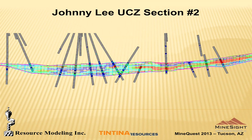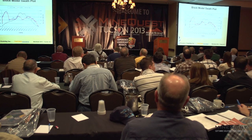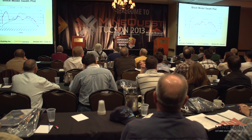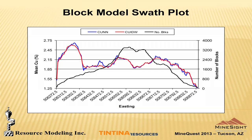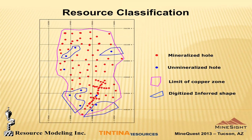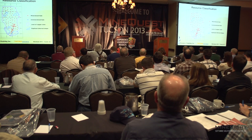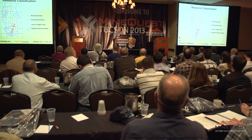This is an example of a swath plot. I wrote my swath plotter years ago and still tend to use it. This is a plan view showing the outline in magenta of the Johnny Lee upper copper zone horizon, with drill holes shown in red where mineralized — well in excess of 1% copper — and a smattering of unmineralized holes. I digitized shapes around those areas: everything inside the magenta line is considered indicated resource, and then I cookie-cuttered out the inferred pods.